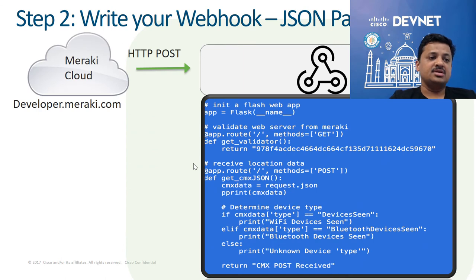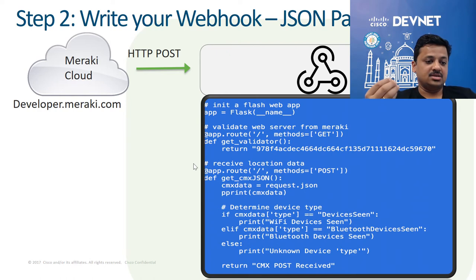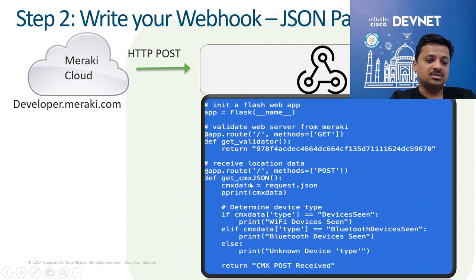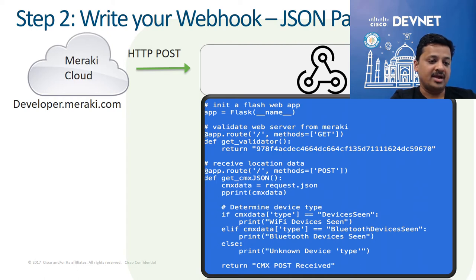The second step is that once you enable it in the dashboard, you need to write your own webhook or your own application. The application has two parts: the first part is a validator, and the second part handles the POST message that comes from Meraki. Here you will receive a JSON which you will parse and write your app business logic on top of.